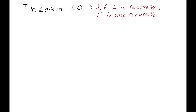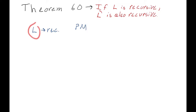Being recursive means that we have a Turing machine that accepts all the words in L and crashes on all the words in L prime. We're going to explain this using a post machine, which is a little bit easier. If L is recursive, then there's some post machine P that accepts all the words in L and crashes on all the words in L complement.